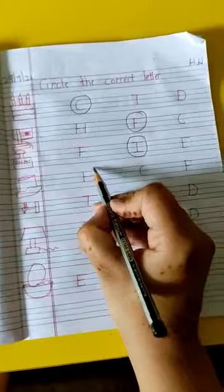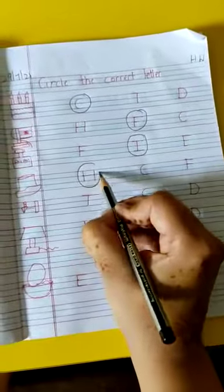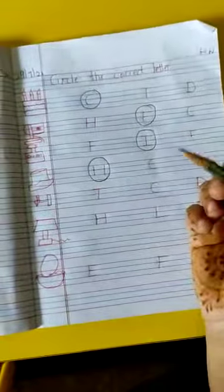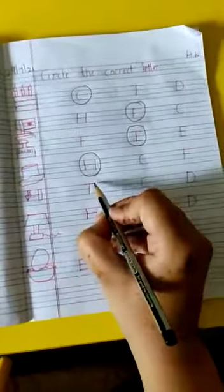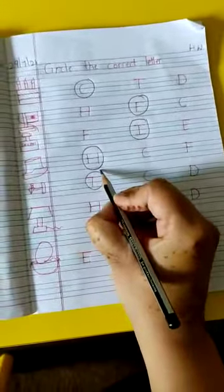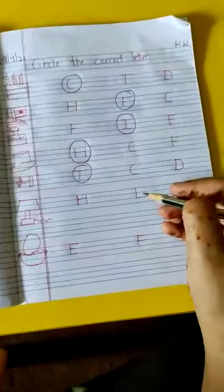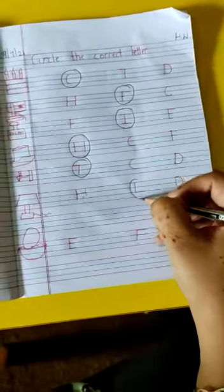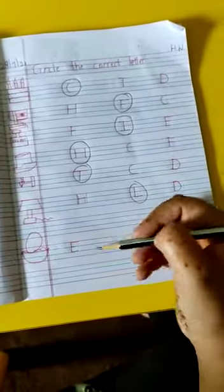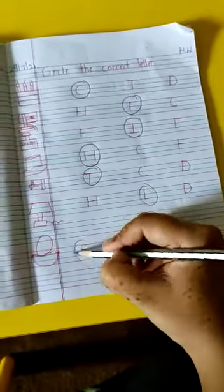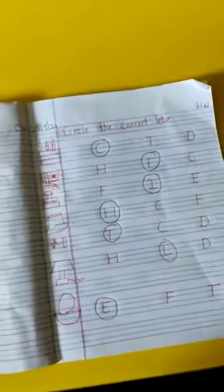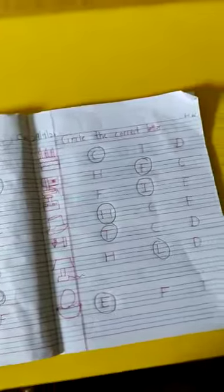Hat - H for hat, circle H. Tap - T for tap, circle T. Lamp - L for lamp, circle L. Egg - E for egg, circle E. Yes, okay. Complete this page now.